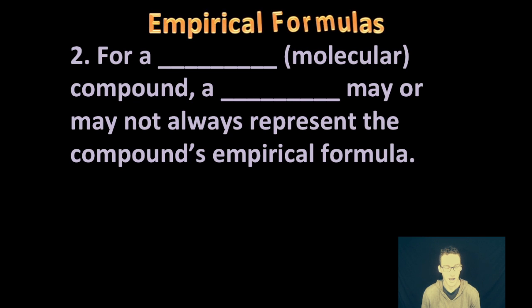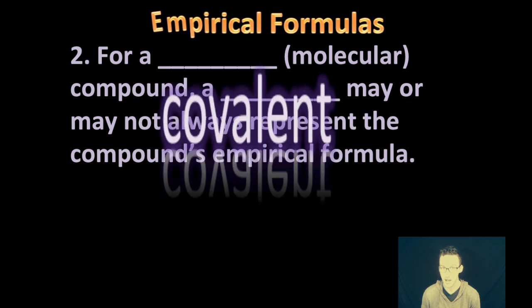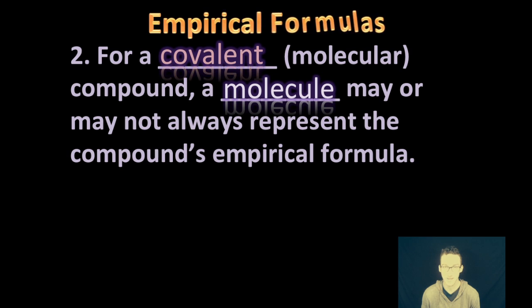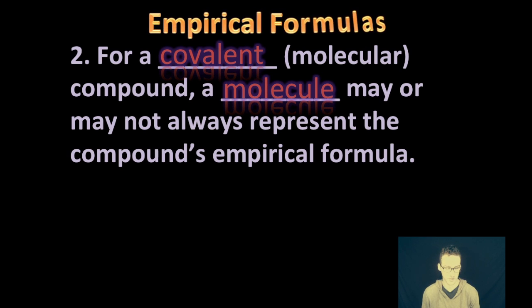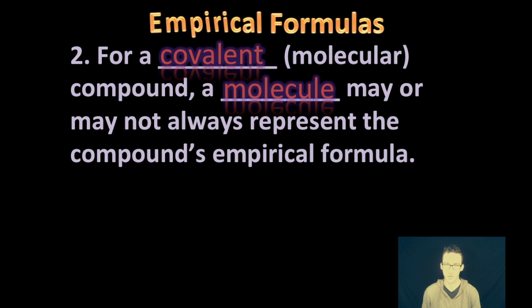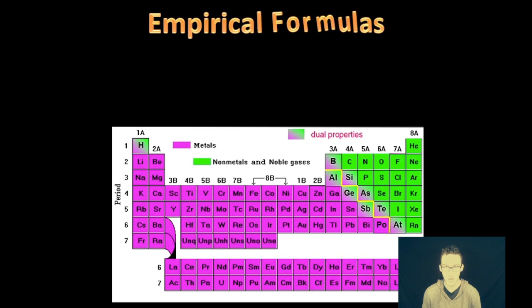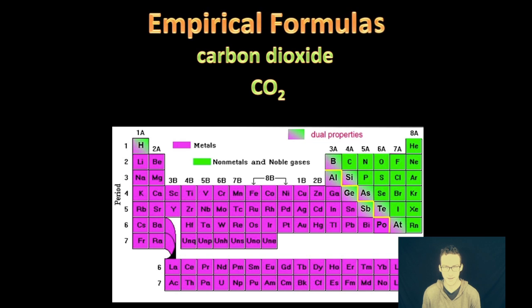Now, for covalent or molecular compounds, the molecule may or may not always represent the compound's empirical formula or the smallest ratio. So you've got to watch out for those covalent compounds when it comes to empirical formulas. Think about carbon dioxide. CO2 is a classic example of a covalent compound, two nonmetals, which does have its empirical formula represented, a ratio of one to two.